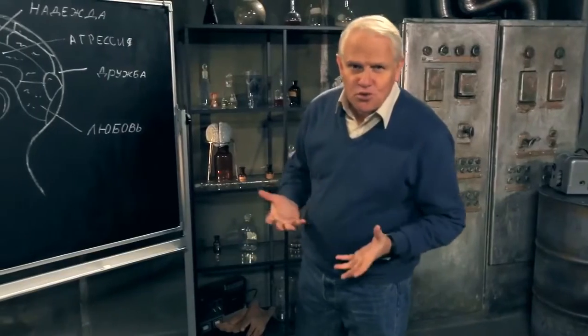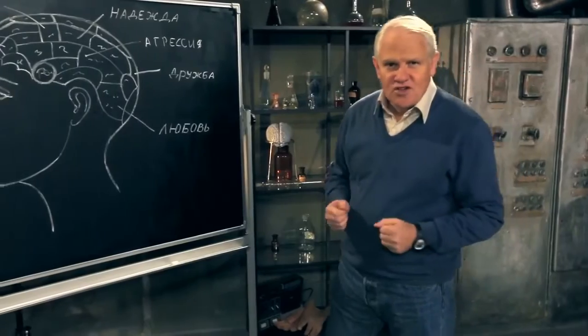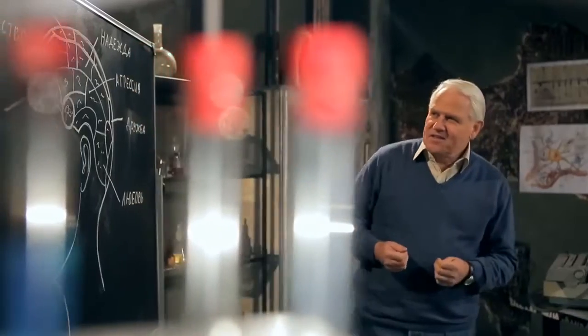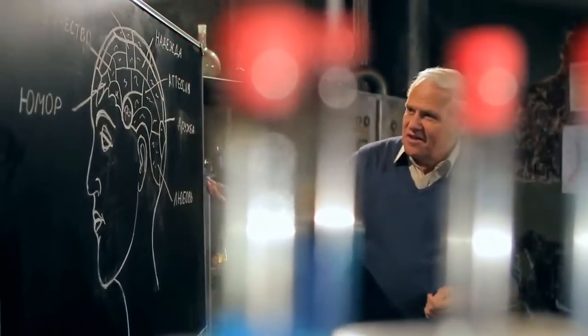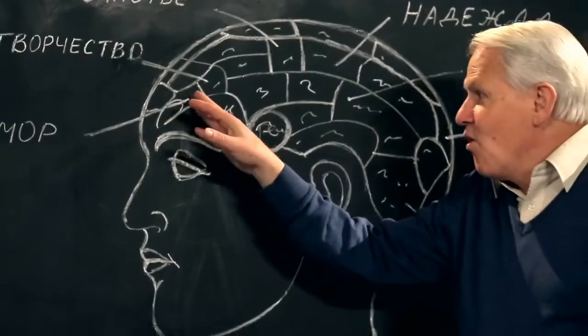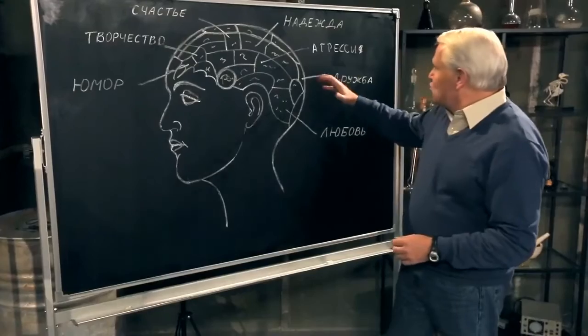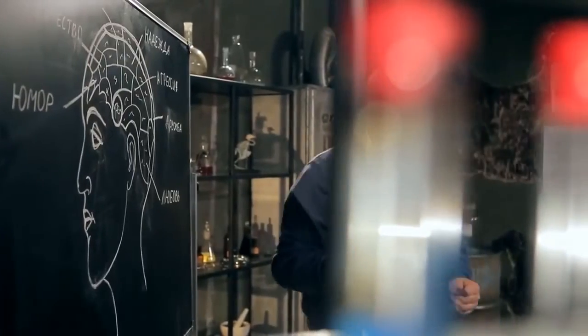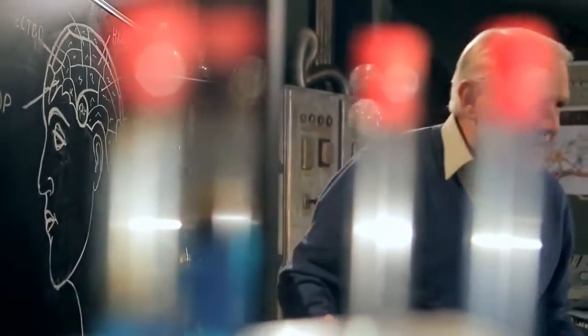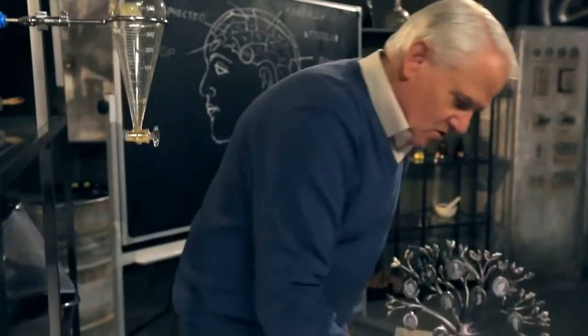Today it is difficult to draw parallels between brain structures and features of our personality. One and a half hundred years ago, scientists made maps of the brain and confidently marked the areas of humor, love and friendship, and even inclination to aggression. But now they just shrug their shoulders.